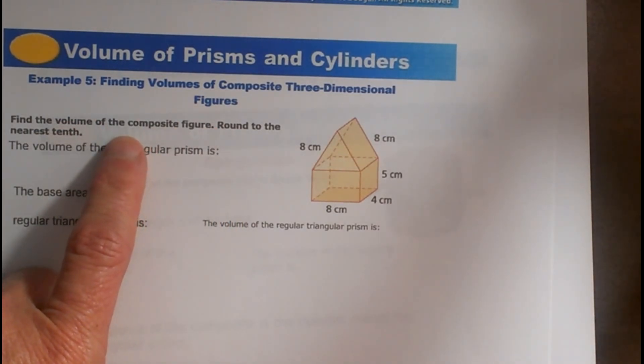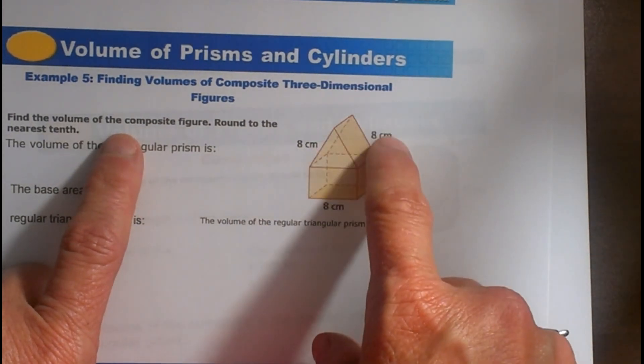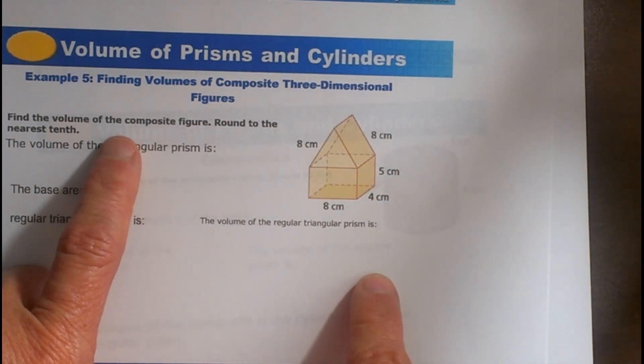So what kind of figures do we have? At first you might say that's a pyramid and a prism on the bottom, but be careful. The top is also a prism because it's got parallel bases, but the bases just happen to be triangles.